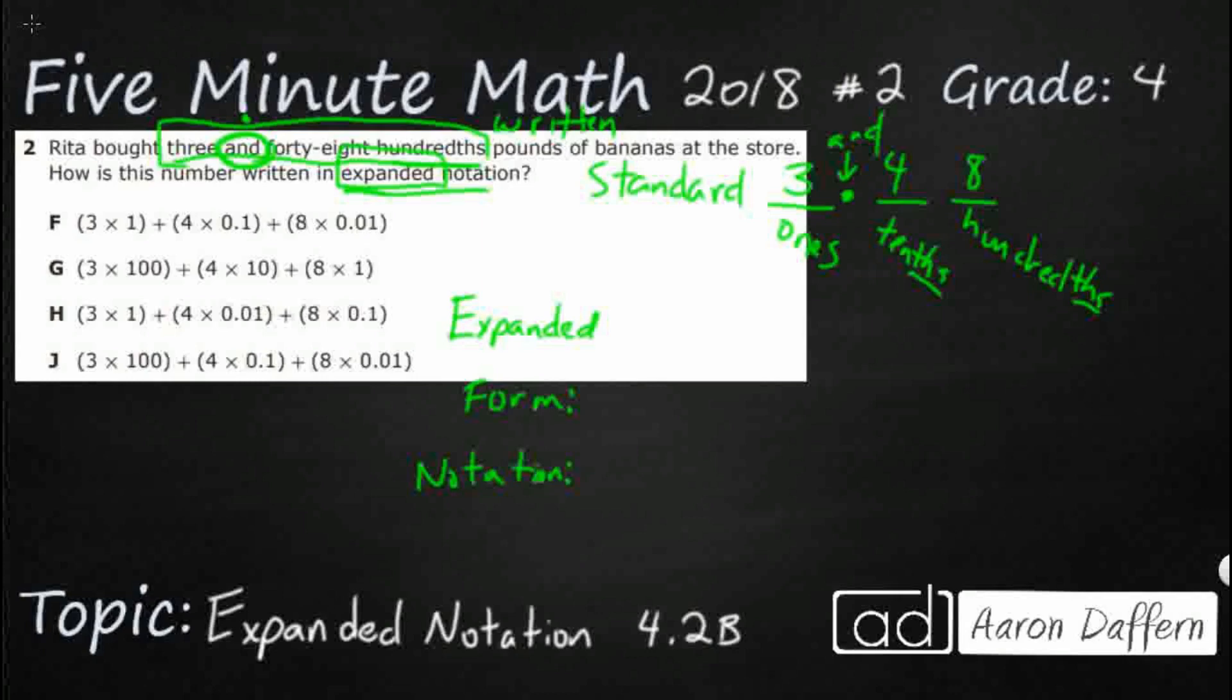So when we're trying to write this number in expanded form, we just write the value of the digit. So a three in the one's place is worth three. Pretty simple. In expanded notation, what we do is we represent the value as a multiplication problem. So we take the digit in that place value, three, and we multiply it by its place value.